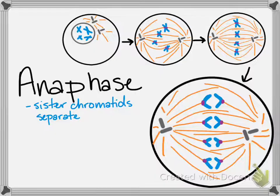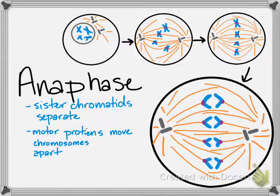During anaphase, you'll see the sister chromatids move apart — 'apart' and 'anaphase' both start with an A, which is a helpful memory trick. The chromosomes are rod-like but still stringy, so they appear as little V-shapes facing each other on a slide, because motor proteins attached to the microtubules are walking the chromosomes toward each pole. For sister chromatids to separate, the cohesin proteins holding the centromeres together must break down, which also happens at the start of anaphase.